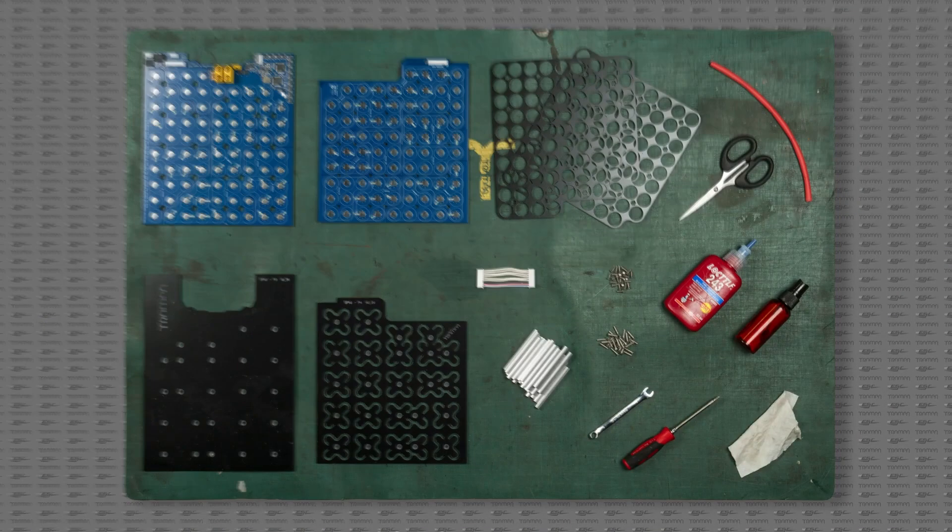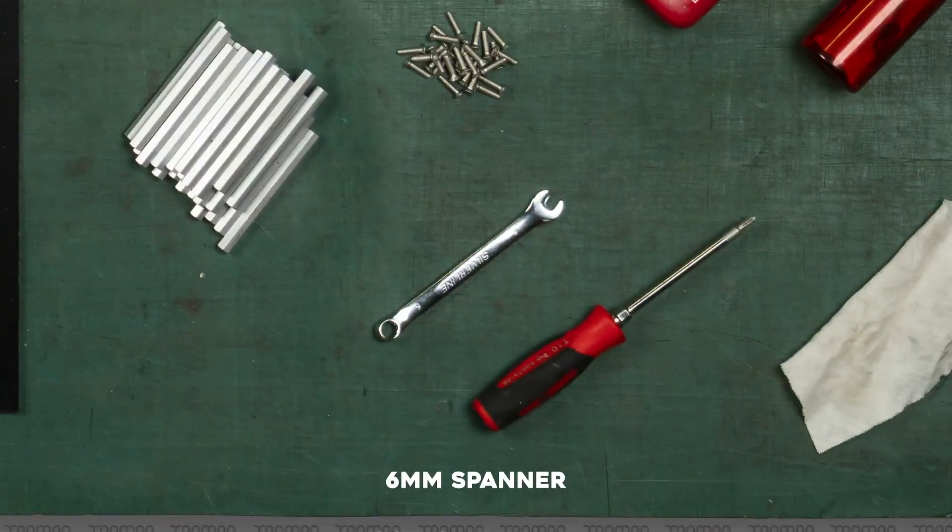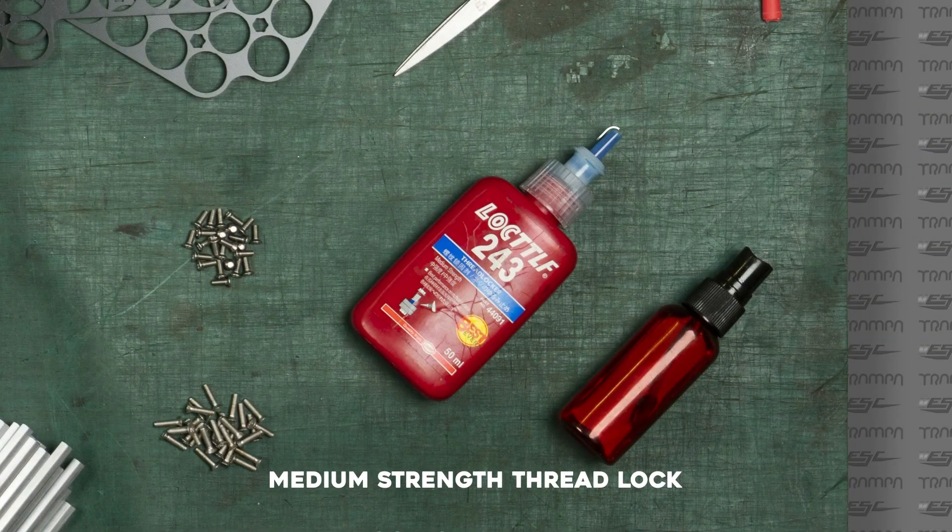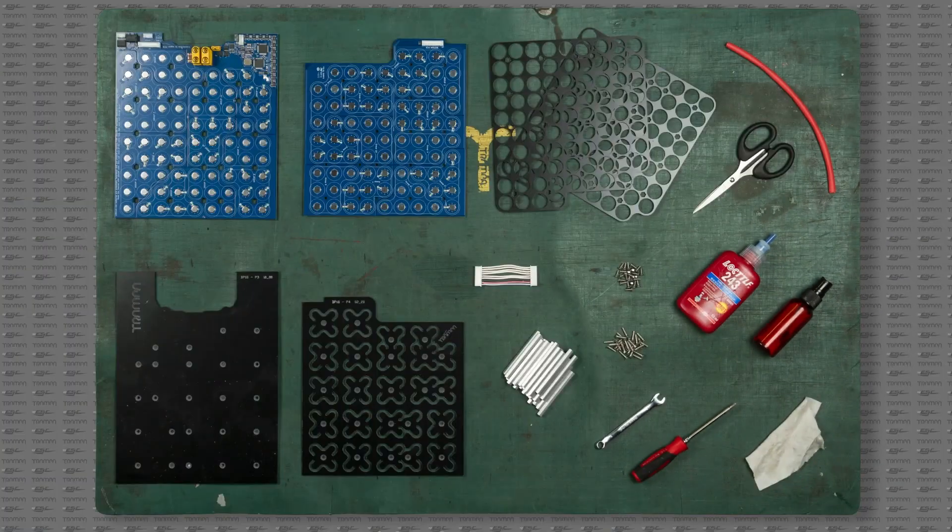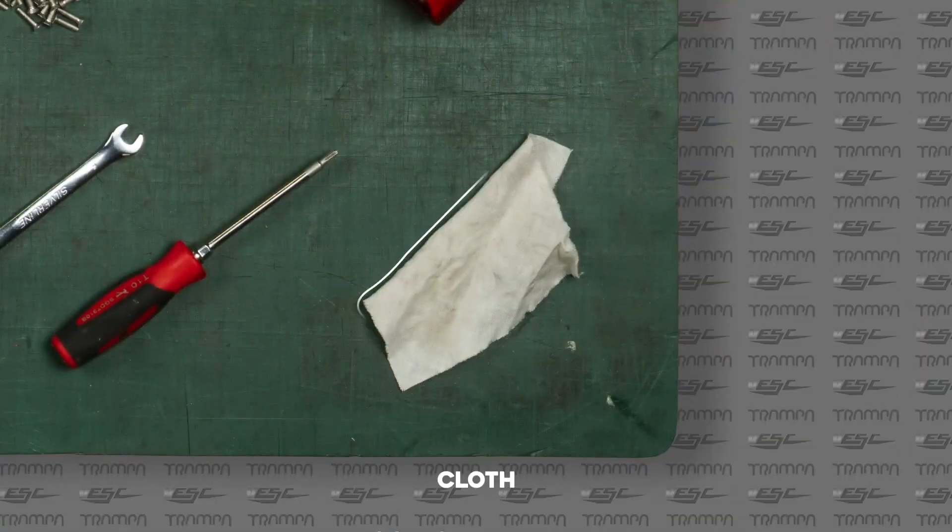The tools you need are as follows: a T10 Torx, a 6mm spanner and some medium strength threadlock. It will also help if you have to hand scissors, isopropyl alcohol and a cloth.